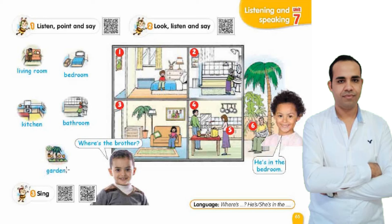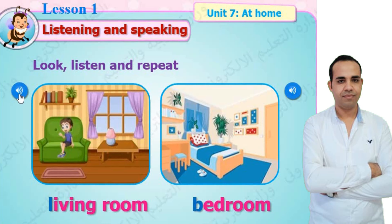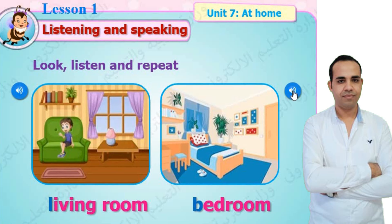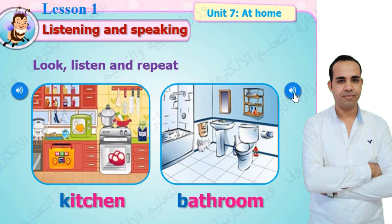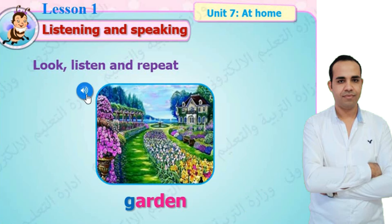Garden — يعني حديقة. Living room. Bedroom. Kitchen. Bathroom. Garden.